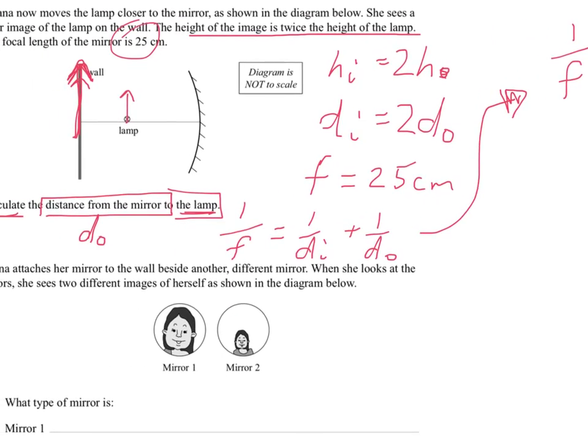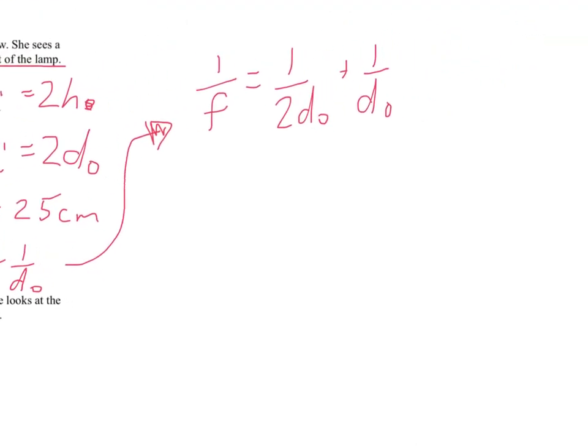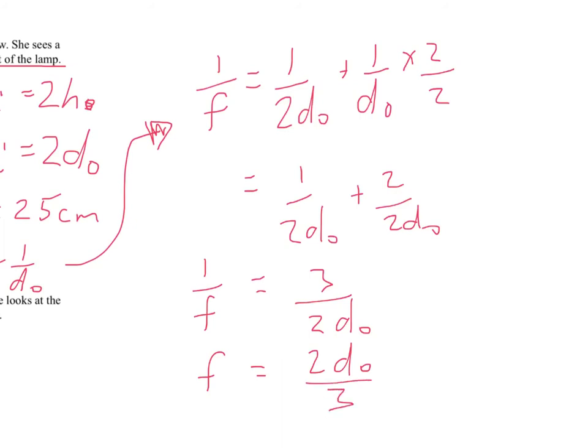In any case, we want to have a common denominator. So we can multiply the 1 over DO by 2 over 2. That will give us 1 over 2DO plus 2 over 2DO. That gives us 3 over 2DO equaling 1 over F. Since we're trying to find DO because we've already got F, we can actually just flip both of those at this stage. So we'd have F equals 2DO over 3. So 3F equals 2DO. 3 over 2 F equals DO. Plug in 25 into where F is.